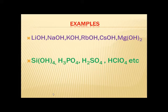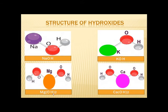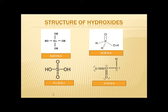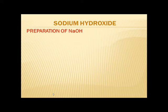The structure of some hydroxides based on the first definition and the structure of hydroxides based on the second definition are shown. Now we are going to discuss the methods of preparation of a few hydroxides. Number one: sodium hydroxide — preparation of sodium hydroxide, also known as caustic soda.